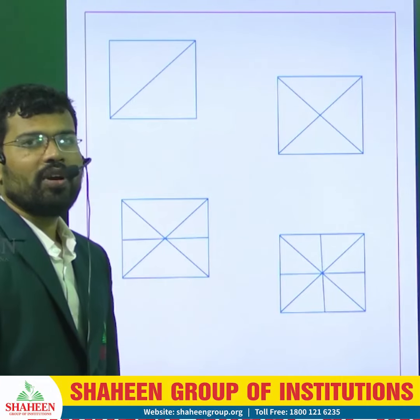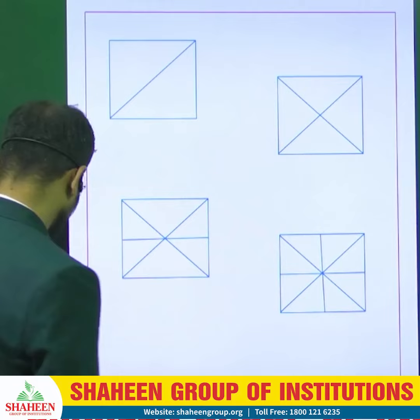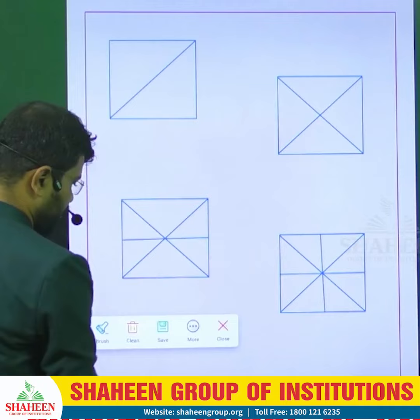Hello friends, once again myself Asif. Let us see what is the shortcut and trick to solve this counting of figures. The basic formula is: diagonal multiplied by number of triangles.